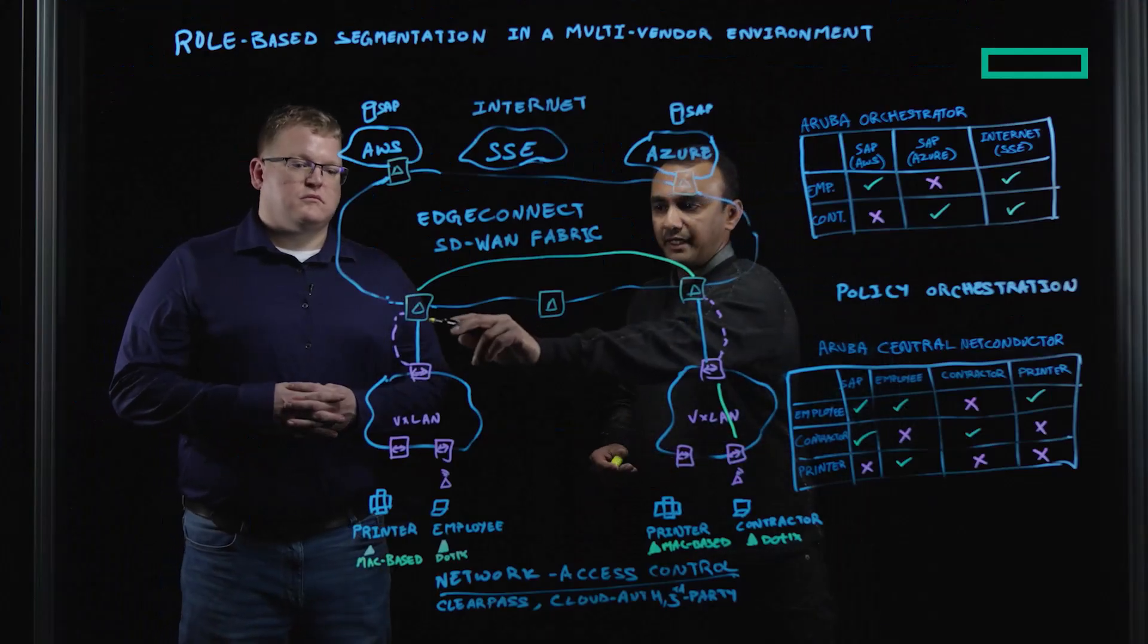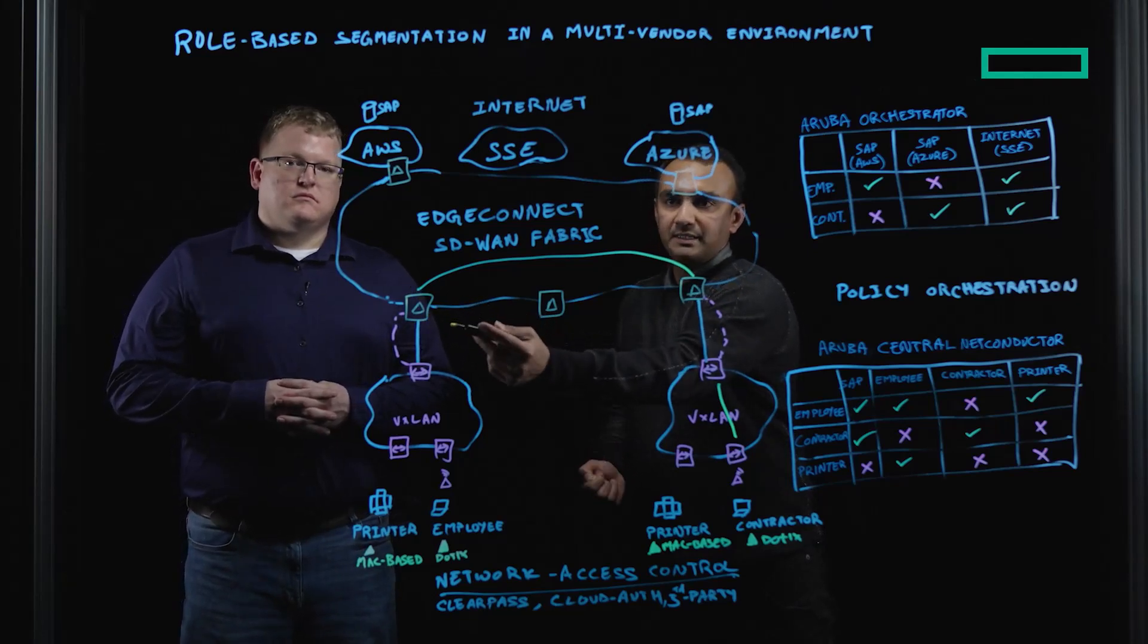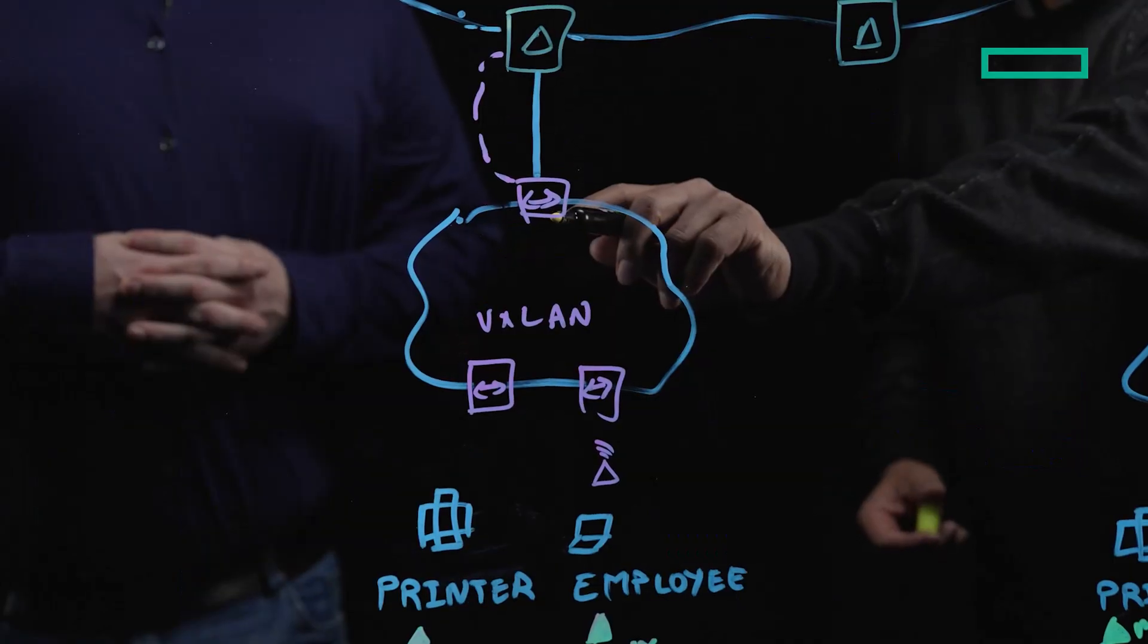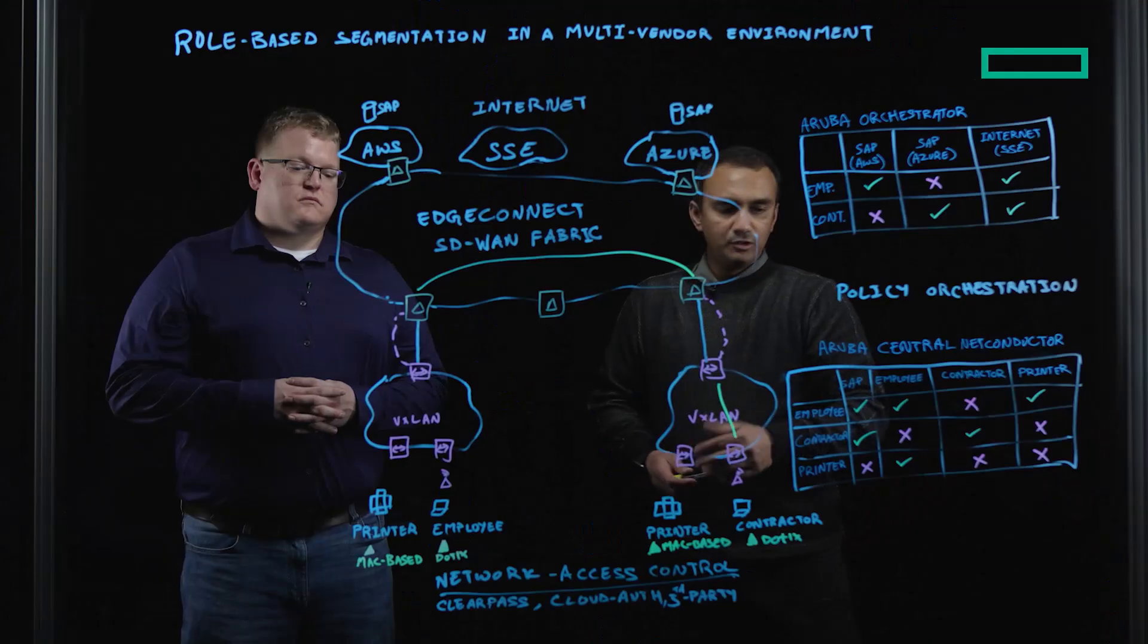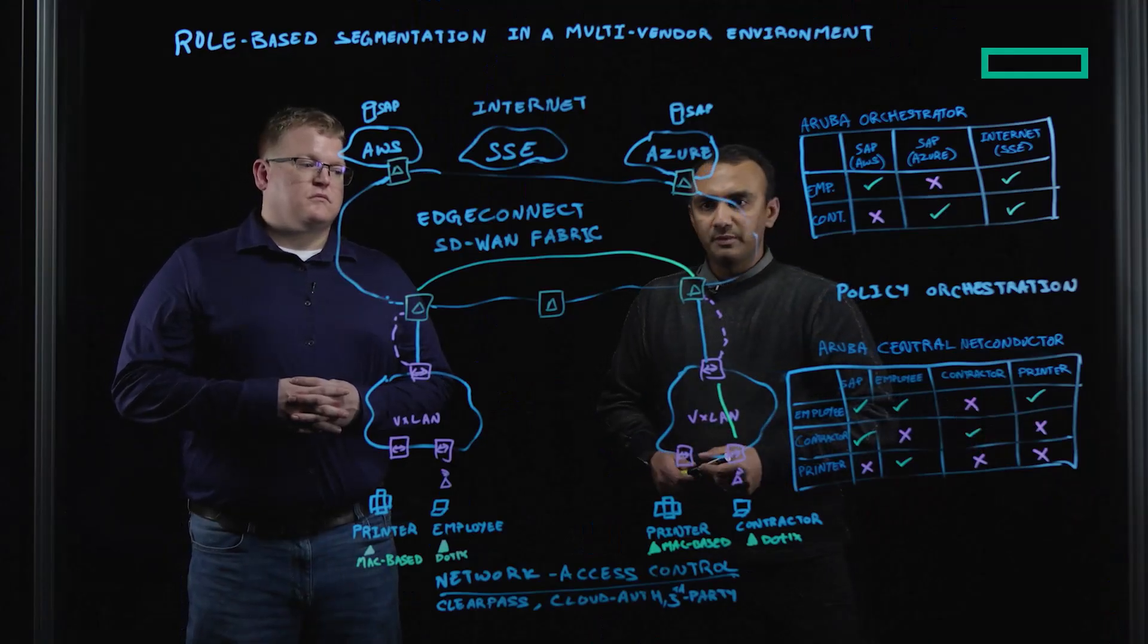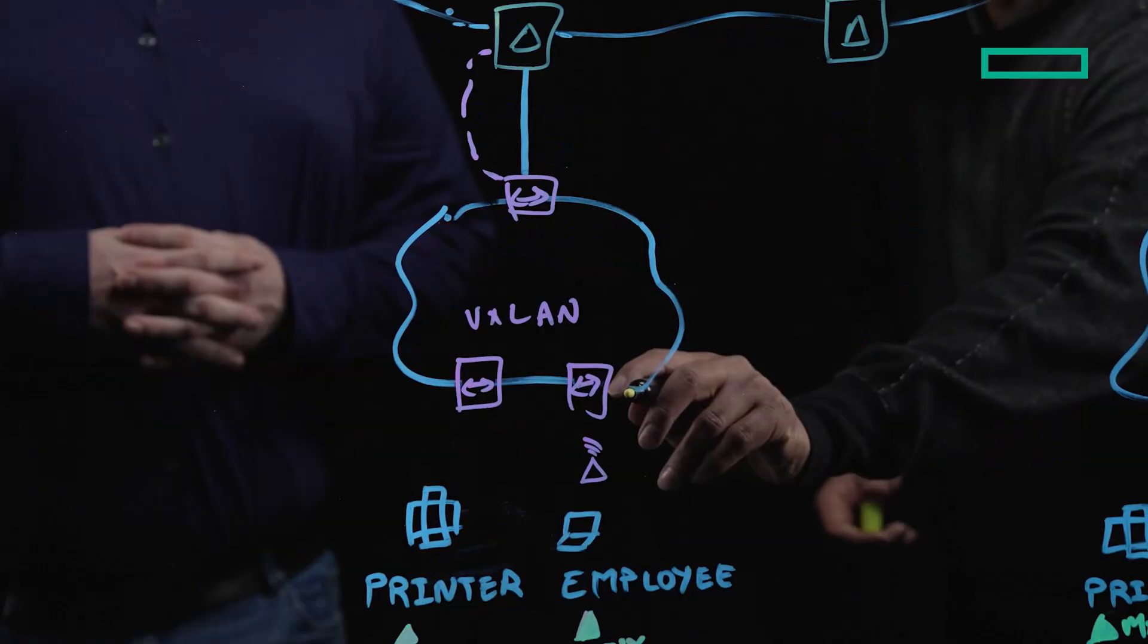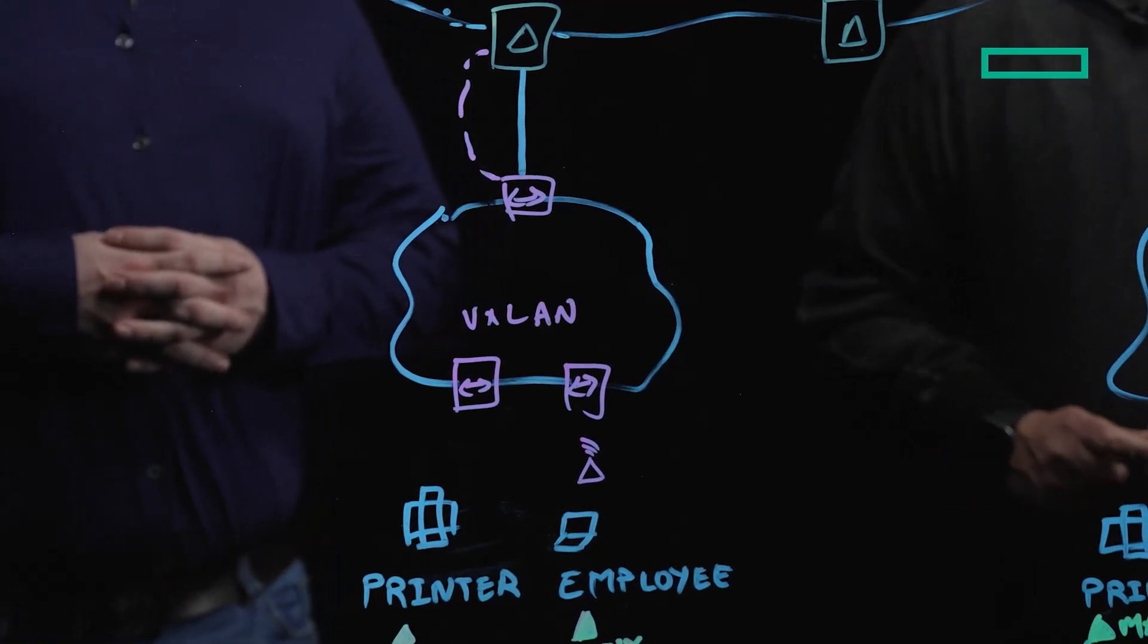The EdgeConnect would now take the IPsec header, converts that to a standard-based VXLAN, carrying the source role, and then forwarding it onto the remote border, and then sending it to the employee. Due to the policy enforcement, which is the employee cannot talk to the contractor, the traffic is then going to be dropped at the destination egress port.